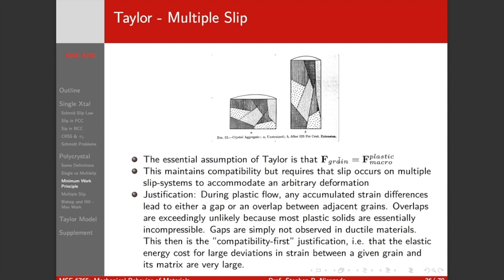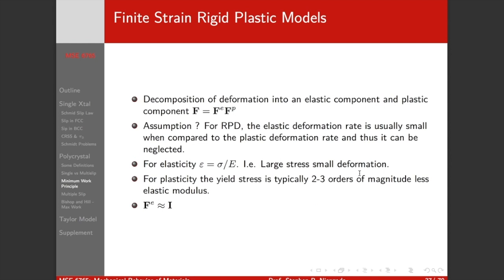The essential assumption of Taylor is that the deformation gradient in each grain is equal to the applied macro-scale deformation gradient. This maintains compatibility but it requires that slip occurs on multiple slip systems to accommodate the arbitrary deformation. The justification is essentially compatibility first — we don't see holes in a polycrystal that have opened up when we've deformed it, and the elastic energy cost for large deviations in strain between a grain and its neighbors is very large. Taylor is not a bad approximation in a lot of cases.